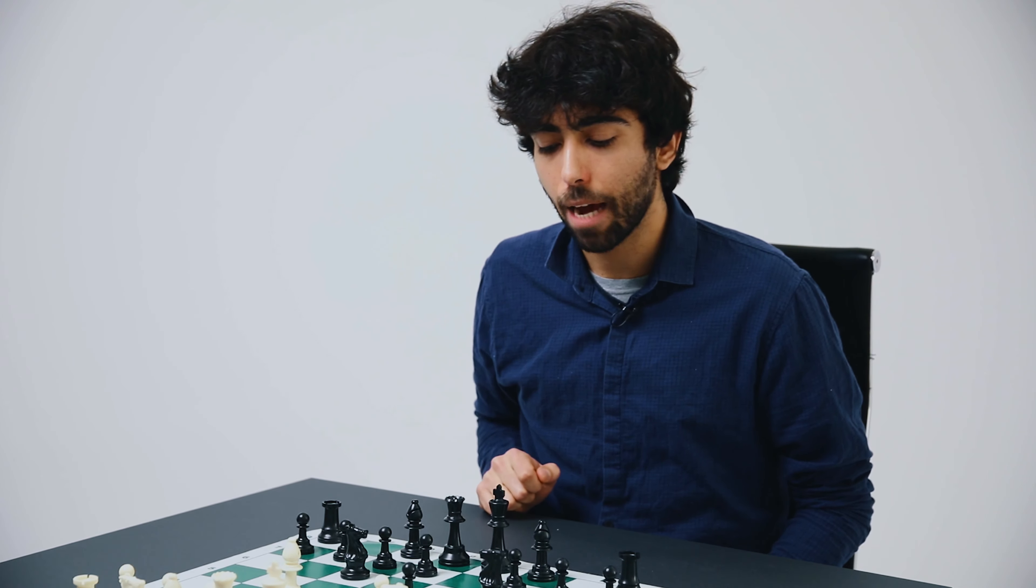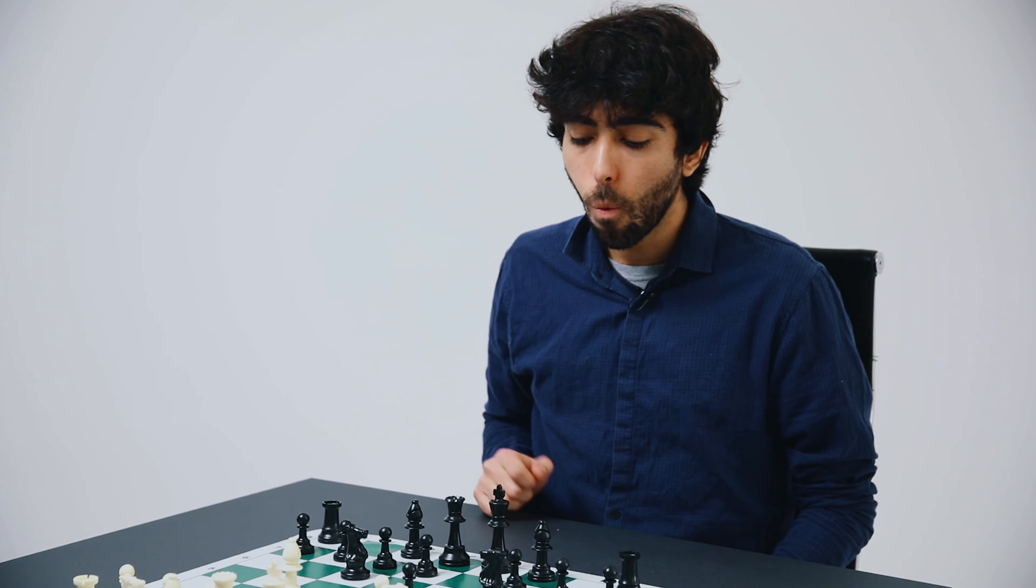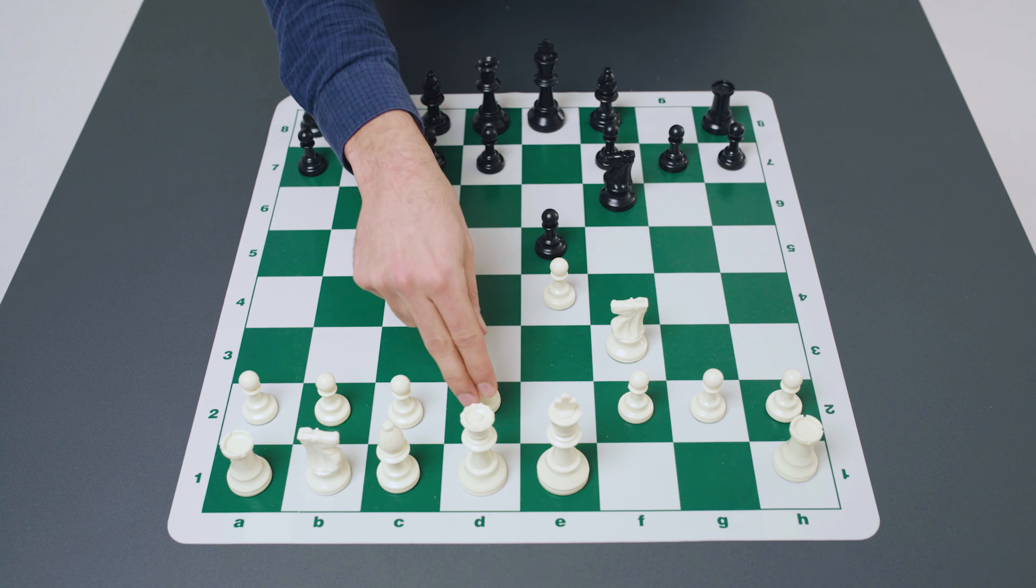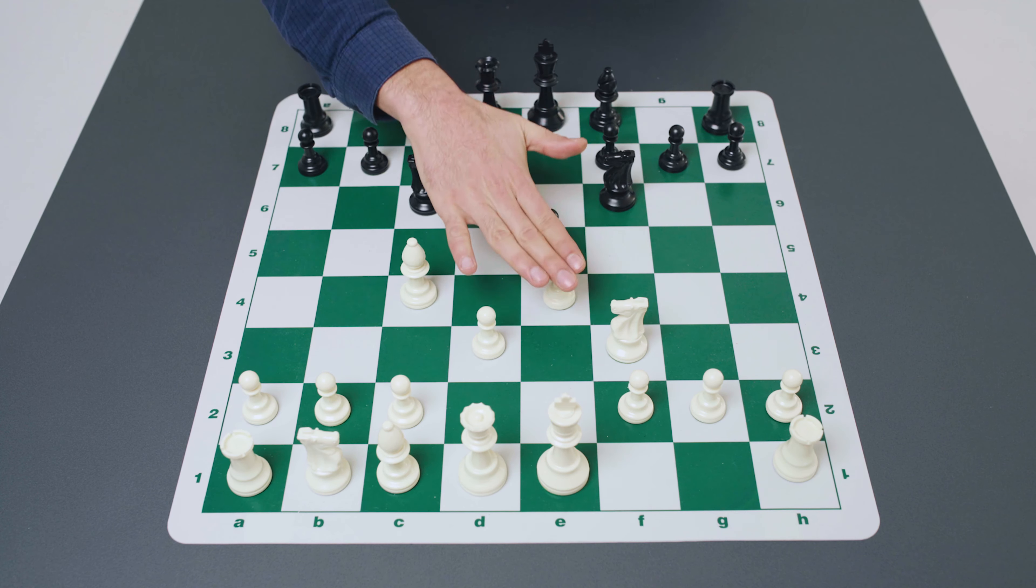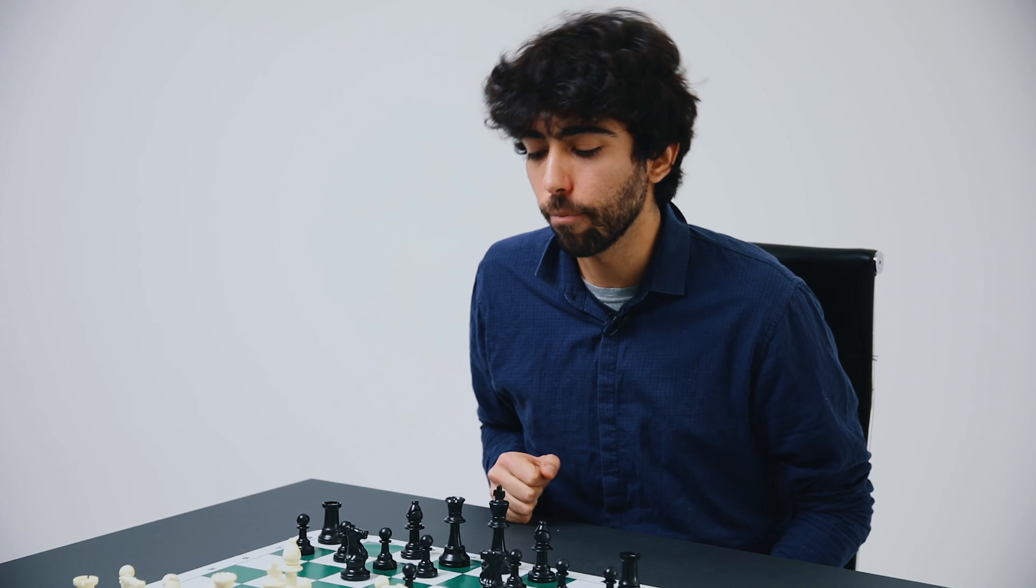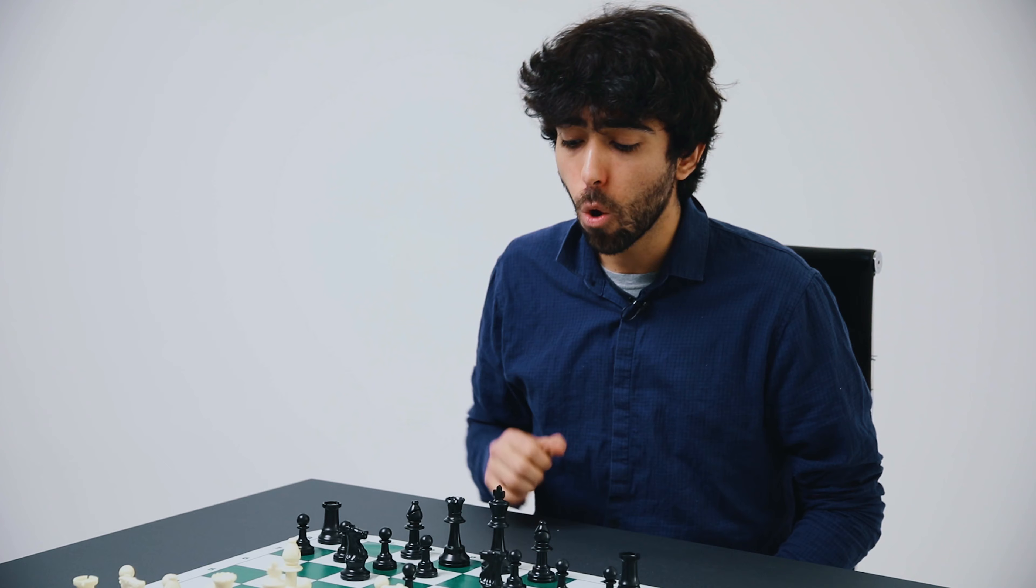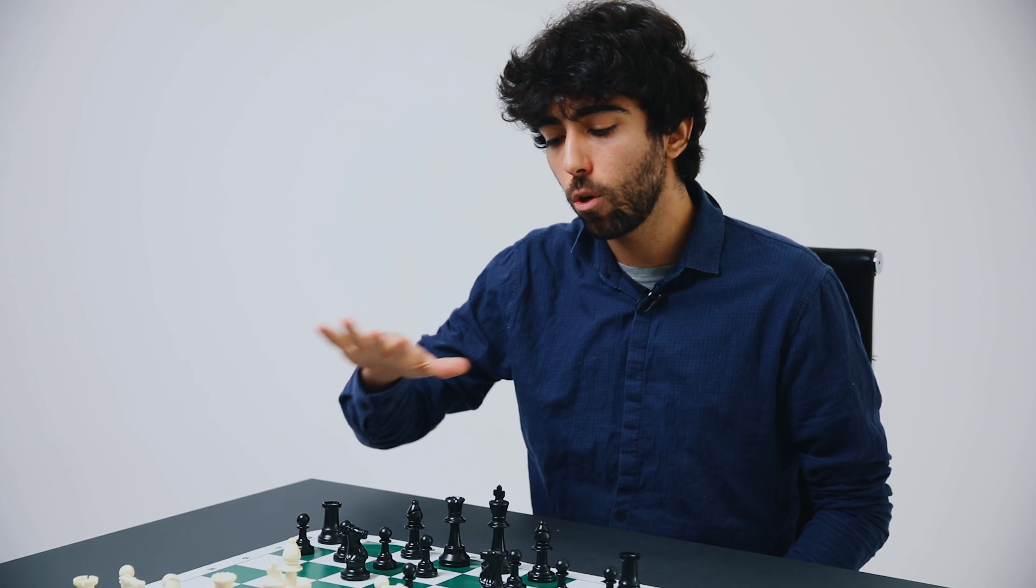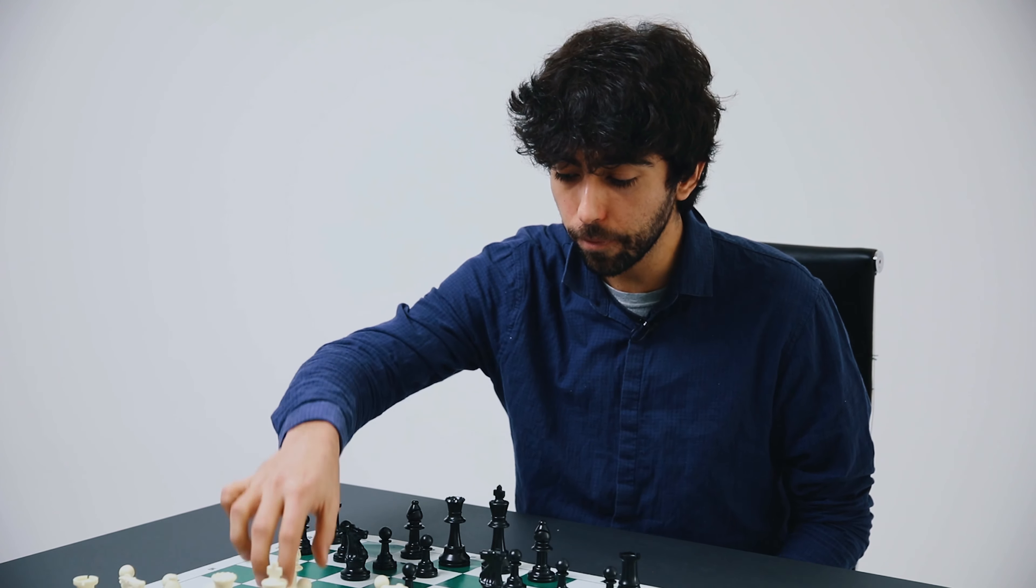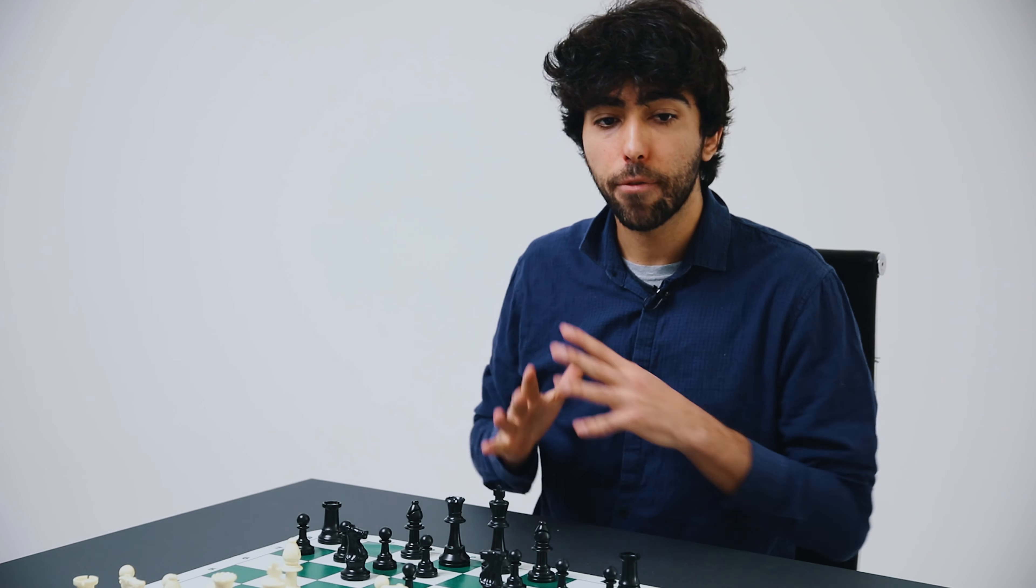Additionally white can actually play the move pawn to d4 and this is the Lolli attack. So this is another option that we will be looking at. Therefore black doesn't usually capture on d5. So instead of capturing knight takes d5 black usually plays knight to a5 and this somewhat unusual looking move is the so-called Polerio defense and that's the main line.